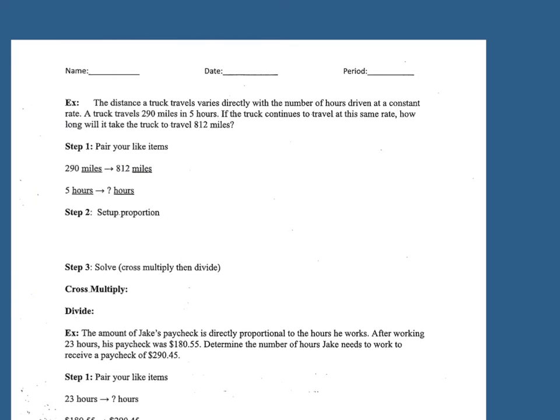Okay, so let's look at the back. First example, the distance a truck travels varies directly. So when it starts telling you this varies directly, whatever they give you first, so like the distance they gave us first, they said the distance varies directly with the number of hours, they're telling you what goes on top. That's what they gave you first. The distance varies directly with hours. Okay, so they're telling you how to set up your ratio. So distance over hours. Distance varies directly with hours, so this is going on top.